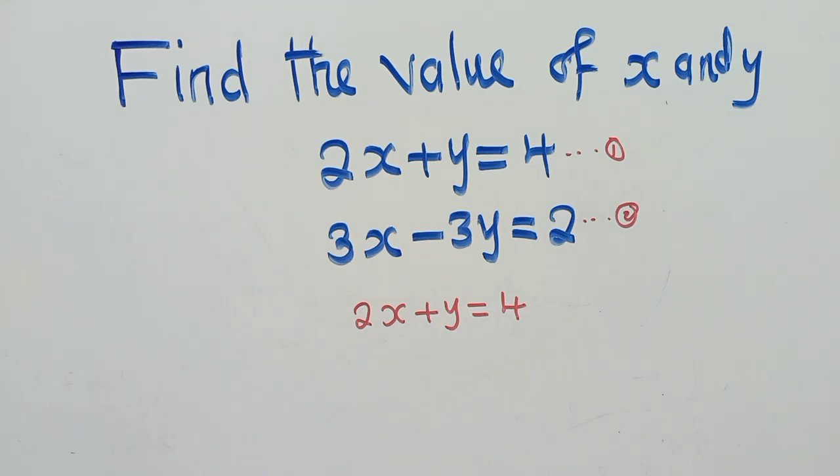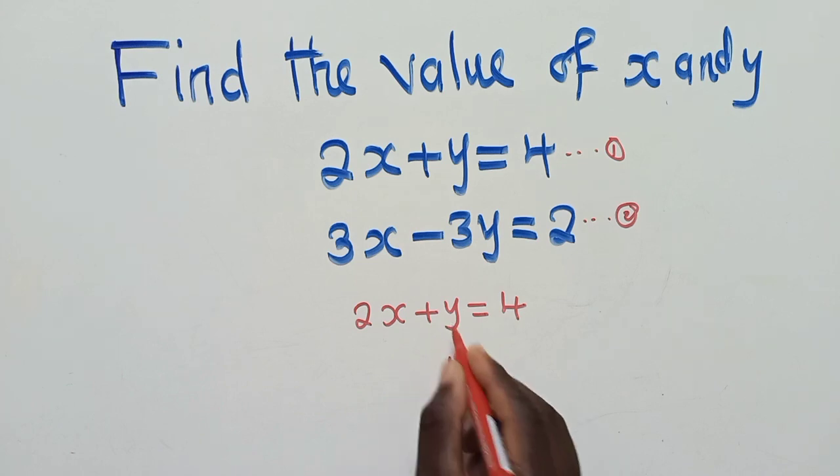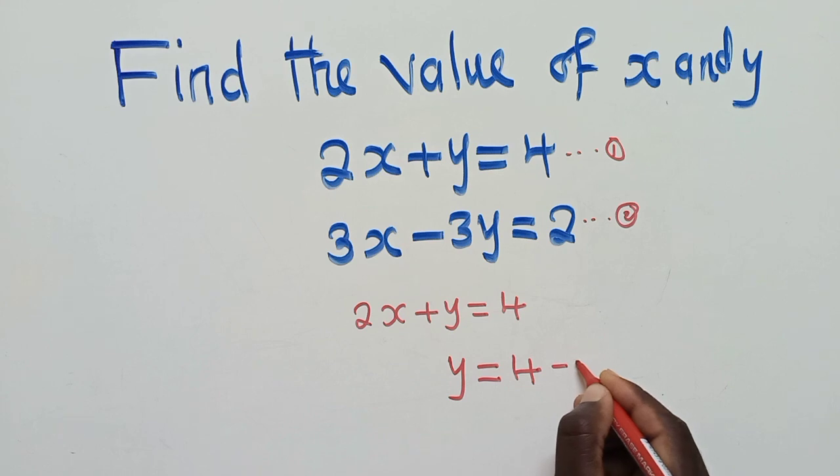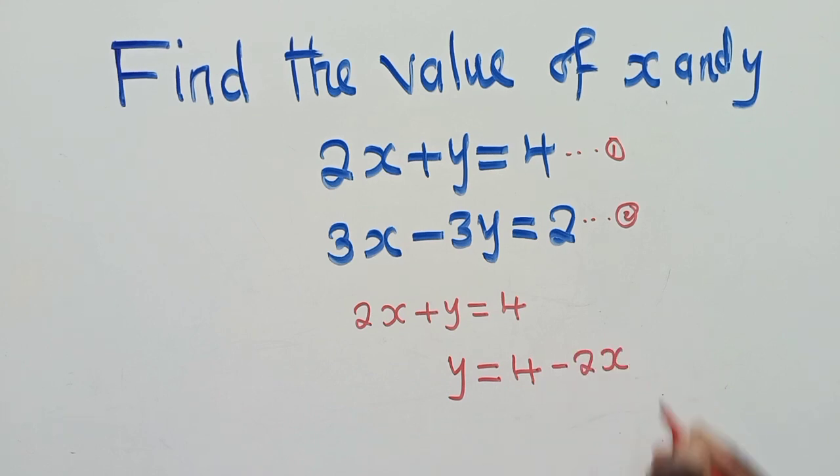Now after getting the first one, you make one of the letters be subject of the formula. So we have 2x plus y here. Whichever letter that you want to be subject of the formula, you can make it. So here, I'll make y subject of the formula. So I shall have y here to be 4 minus 2x. Hopefully you've seen what has happened. This 2x cross the equal sign and this is what we have.